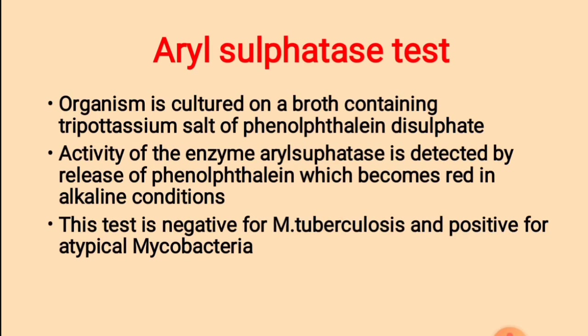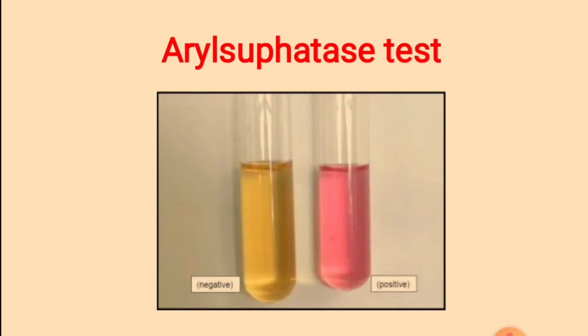Aryl sulfatase test: the organism is cultured on a medium containing the tri-potassium salt of phenolphthalein disulphate. Activity of the enzyme aryl sulfatase is detected by the release of phenolphthalein, which turns red in alkaline conditions. This test is negative for Mycobacterium tuberculosis and positive for atypical mycobacteria.